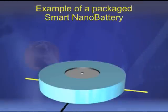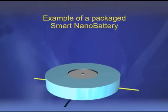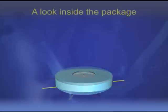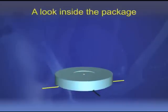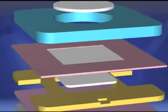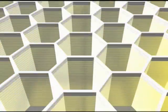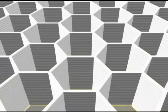This is the battery in its packaged form — the penny is provided for scale. These are the battery's internal components. Note the nanostructured membrane: upon activation, the electrolyte sitting on top of the membrane passes through this honeycomb structure and activates the battery.